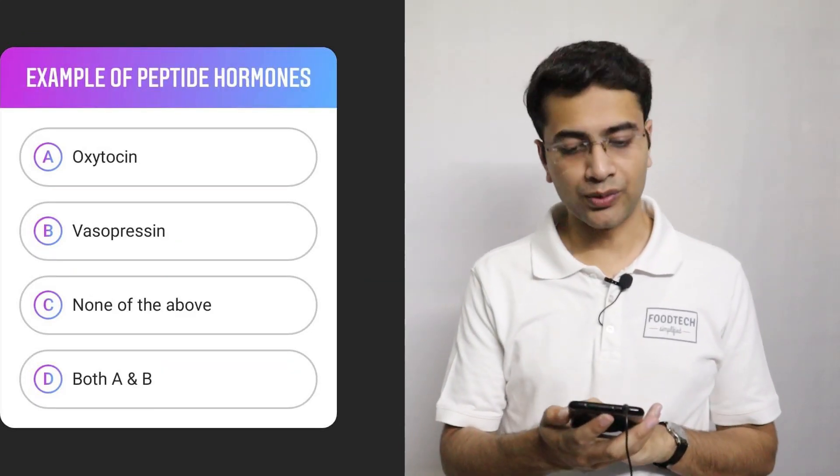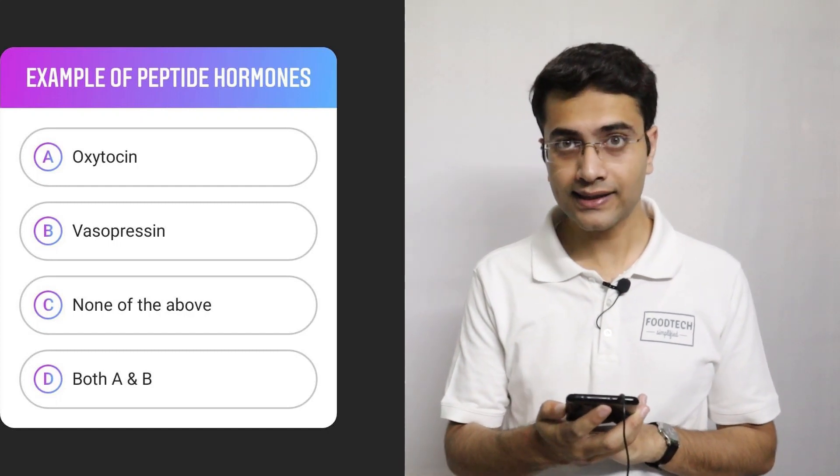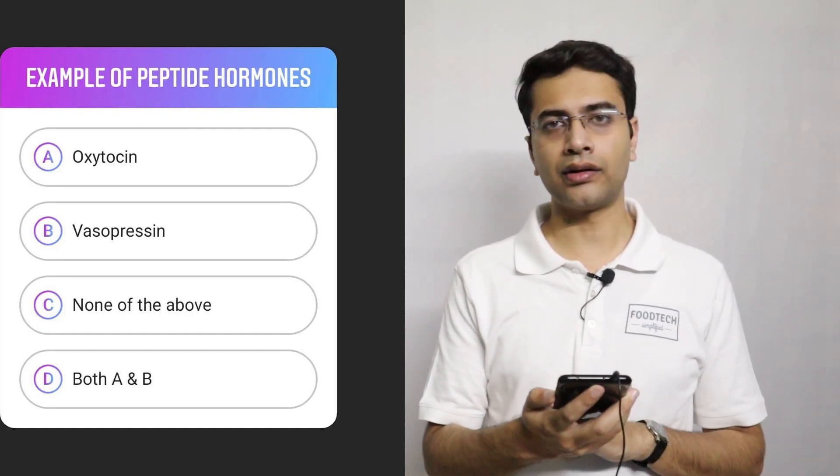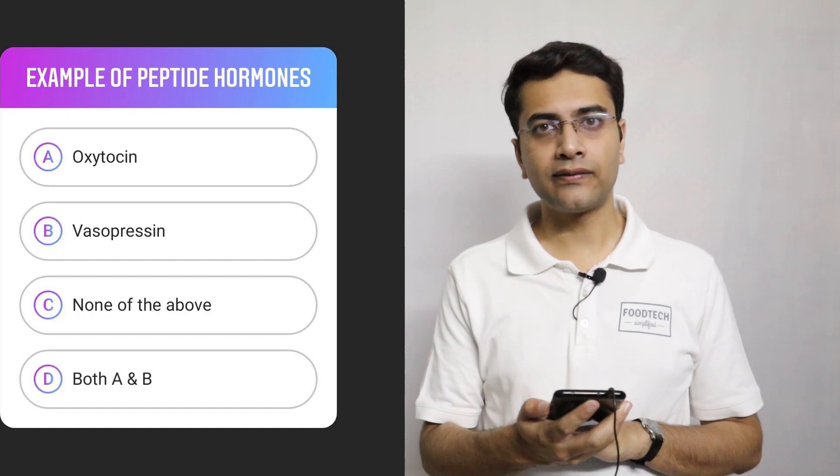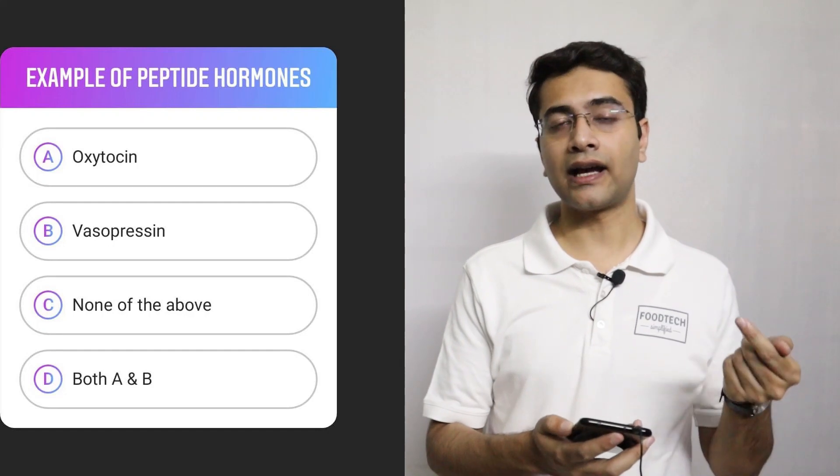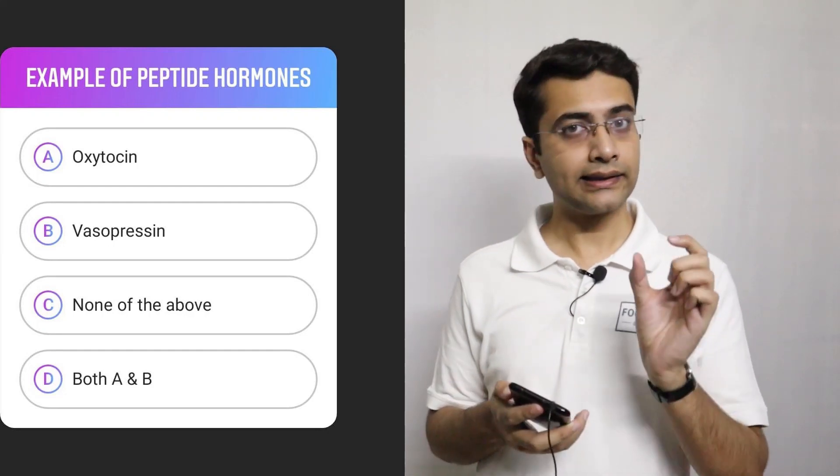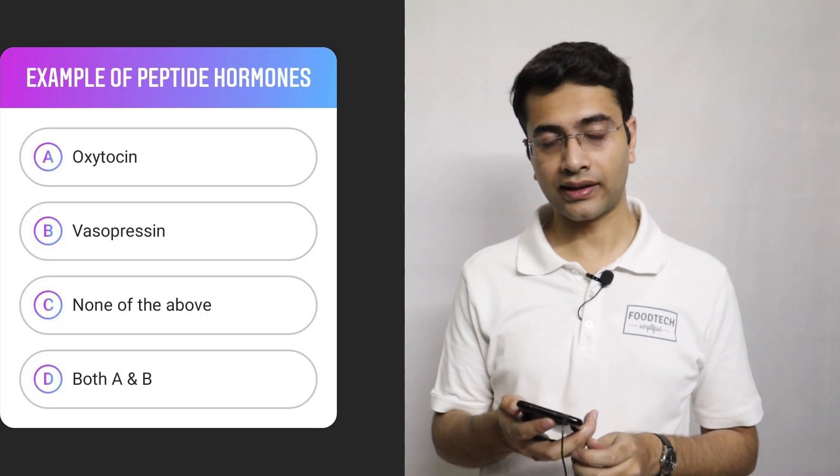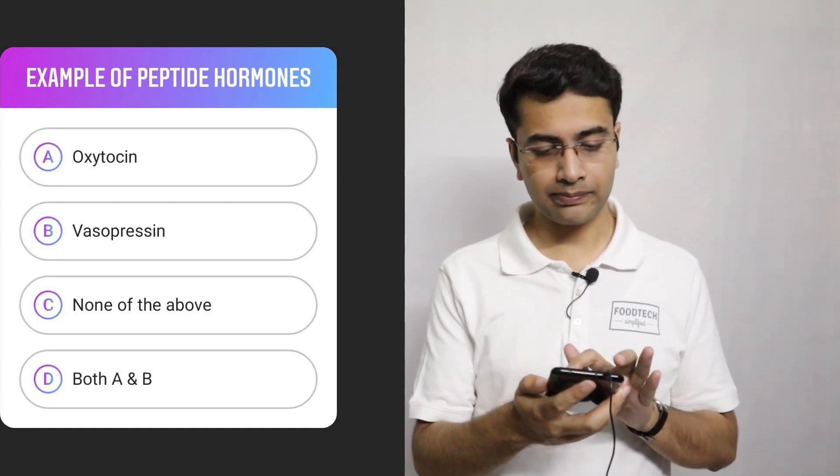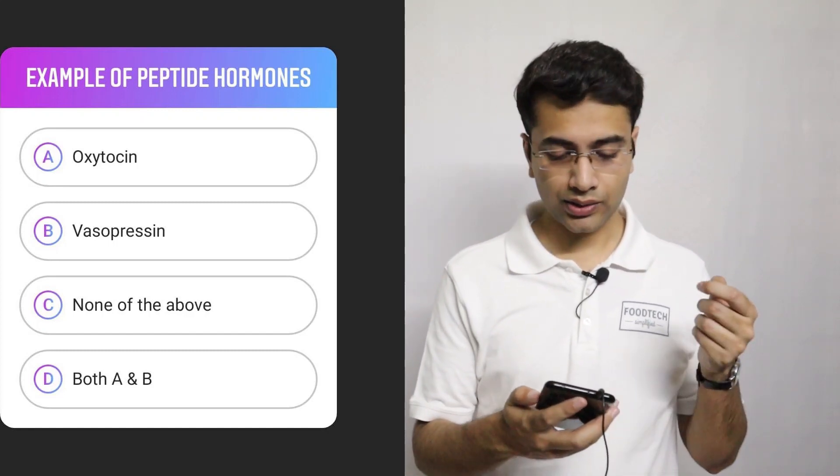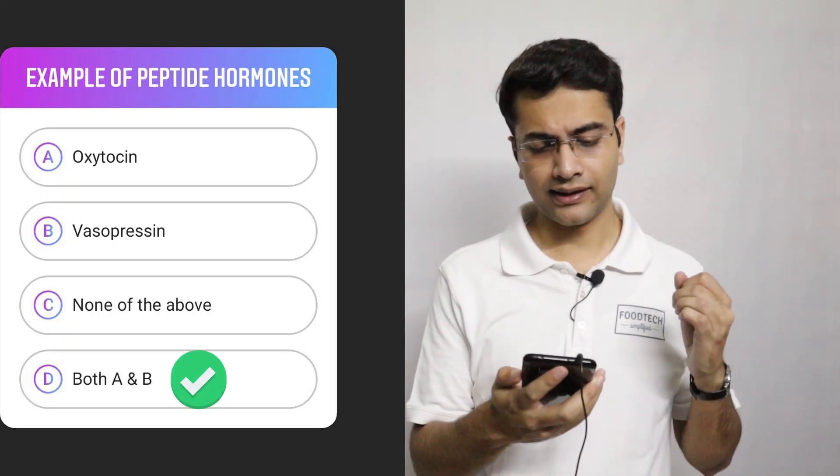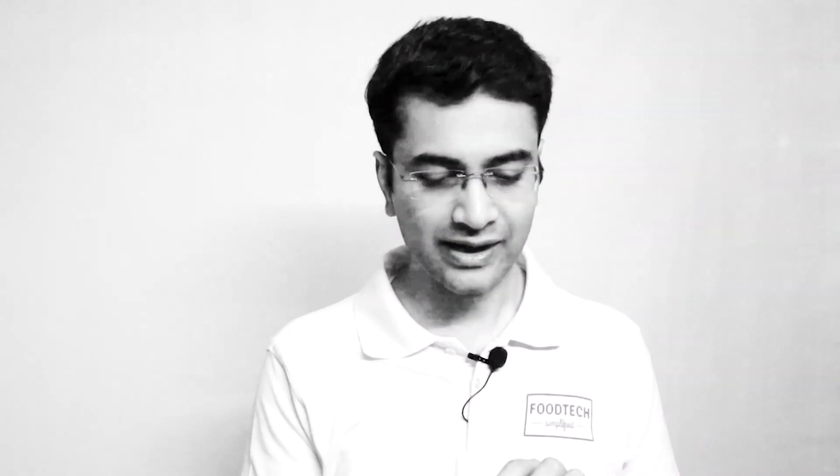So the next question is example of peptide hormones. Option A oxytocin, option B vasopressin, option C none of the above, and option D is both A and B. Now a little bit of background on peptides. So peptides are formed when alpha amino group of one amino acid reacts with alpha carboxyl group of another amino acid. Then a peptide bond is formed. In some cases, peptides behave as hormones. So oxytocin and vasopressin, both of them are peptide hormones. Oxytocin is also known as love hormone, which is totally missing from my life.